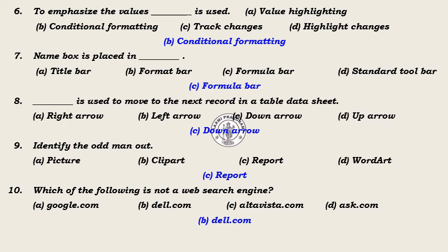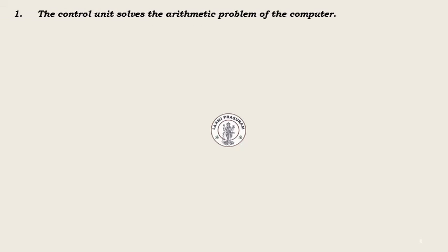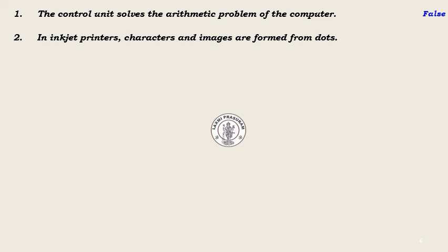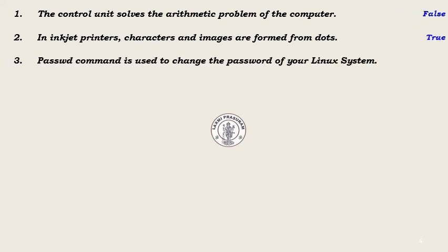True or false. Question 1: The control unit solves the arithmetic problem of the computer. Answer: False. The ALU solves arithmetic problems. Question 2: In inkjet printers, characters and images are formed from dots. Answer: True. Question 3: PASSWD command is used to change the password of your Linux system. Answer: True.